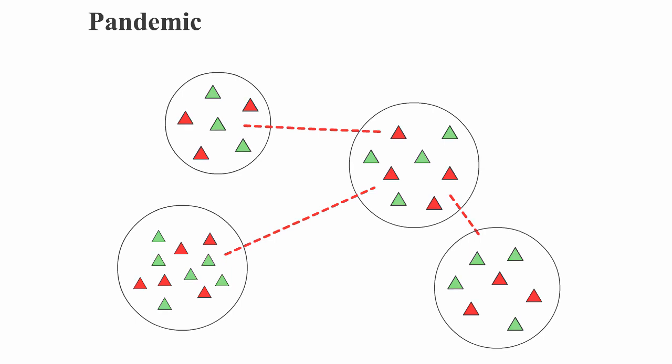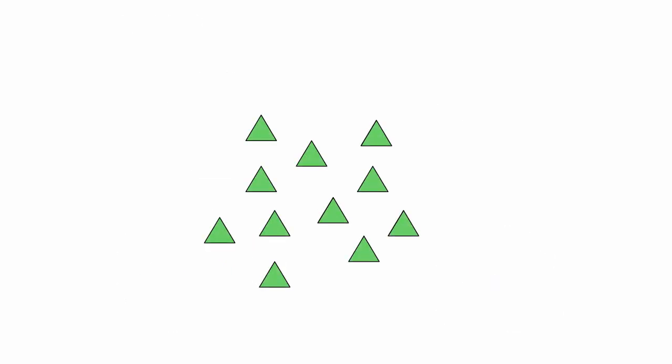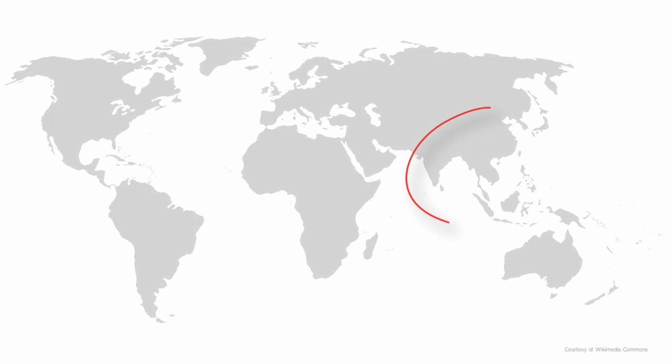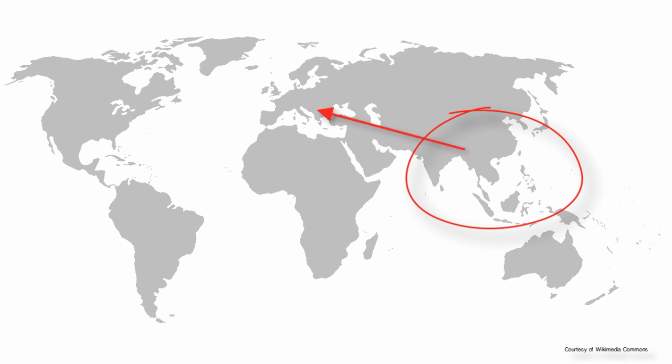Let's once again use the flu as an example. If a new form of flu, endemic to areas of Southeast Asia, starts to increase in frequency in those populations, then it is said to be an epidemic. An outbreak occurs if the flu moves from Southeast Asia to Southern Europe. If it then moves to North America and Africa, it is said to be a pandemic.